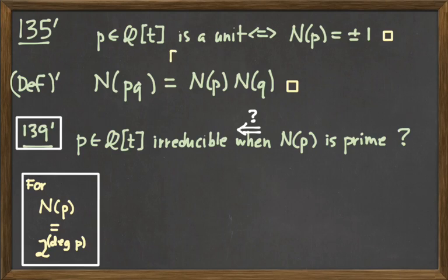After all, if P is a unit, then that must mean that there is another polynomial Q, such that P times Q is equal to 1, and these P's and Q's are polynomials. But, just taking the norm of both sides, we get that the norm of P times the norm of Q must equal the norm of 1, which is equal to 1.